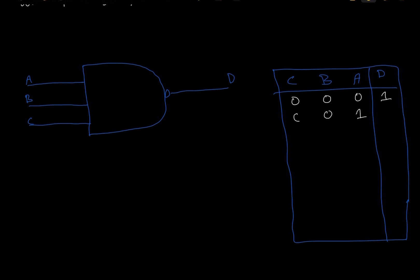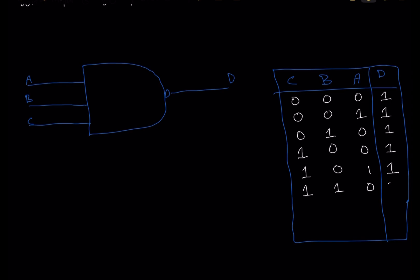If input A is high, input B is low, and input C is low, the output will be still high. If input A is low, input B is high, and input C is low, the output will be still high. The output will be high in all conditions in the NAND gate except when all inputs are high. If input A is low, input B is low, and input C is high, the output will be still high. If input A is high, input B is low, and input C is high, the output D will be still high. If input A is low, input B is high, and input C is high, the output will be still high.